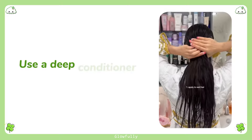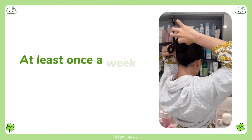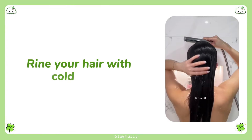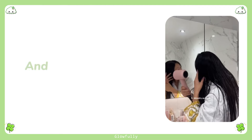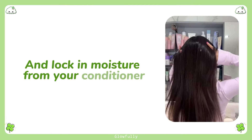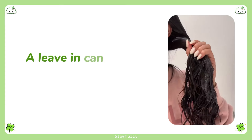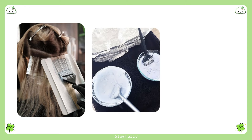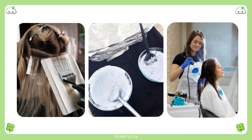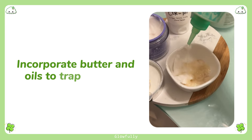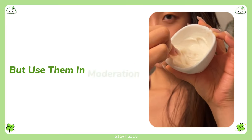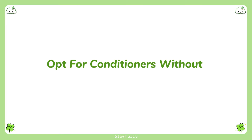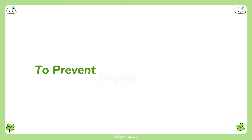Tips for high porosity hair: use a deep conditioner or hair mask at least once a week to restore and retain moisture. Rinse your hair with cold water to close the cuticle layer and lock in moisture from your conditioner. When it comes to high porosity hair, there's no such thing as too much moisture — a leave-in can help provide ongoing moisture throughout the day. Limit frequent coloring, bleaching, or chemical treatments, as they can increase porosity by lifting the cuticle. Incorporate butter and oils to trap moisture, but use them in moderation. Opt for conditioners without sulfates and silicones to prevent drying out your hair.